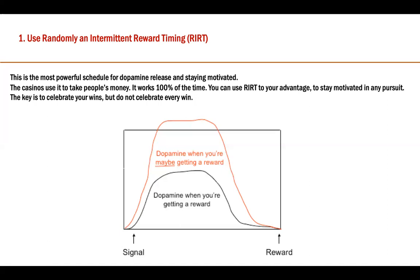Dopamine is a molecule of anticipation — sometimes the thought that 'maybe I'm winning this time' raises your dopamine levels. Sometimes celebrate your win; sometimes just associate that win with the effort you put in. As shown in the figure, dopamine when you are anticipating a reward is actually higher than dopamine when you are actually receiving it — so you can use this to trick your brain.